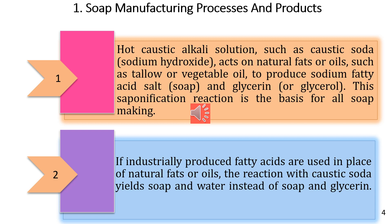The first process uses hot caustic alkali solution such as caustic soda — sodium hydroxide. In the second process, fatty acids are used in place of natural fats or oils. The reaction with caustic soda yields soap and water instead of soap and glycerol. So in industry, fatty acids are used instead of natural fats for the manufacturing of soap.